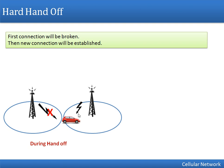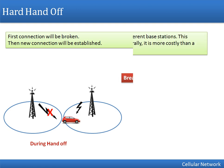In hard handoff, before establishing a connection with the new base station, the old connection has to be broken. At any given time, the mobile will be connected to only one base station. In this scenario there are chances that the call will be dropped, because the previous connection is broken before the new connection is established. So hard handoff means: break before make.